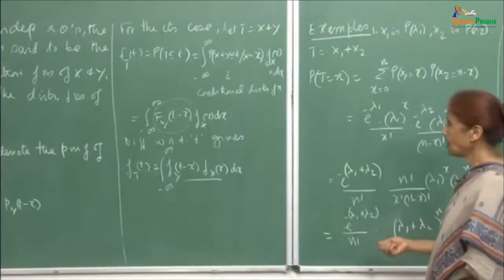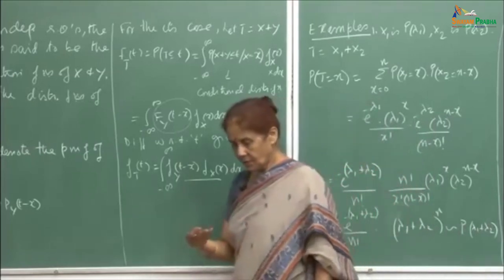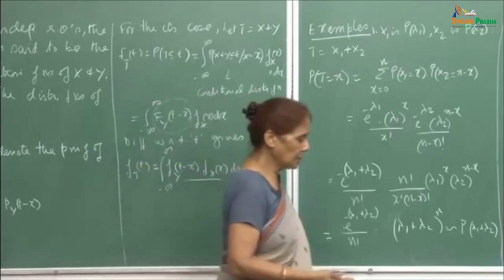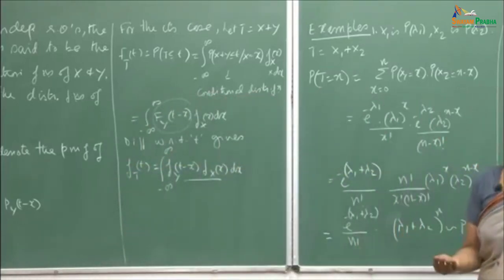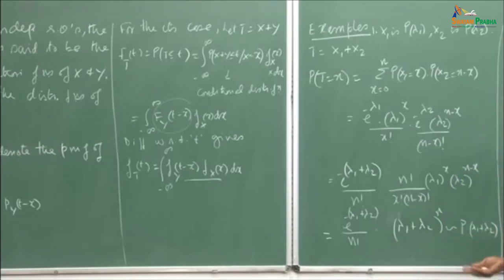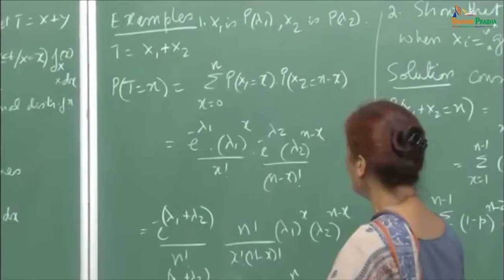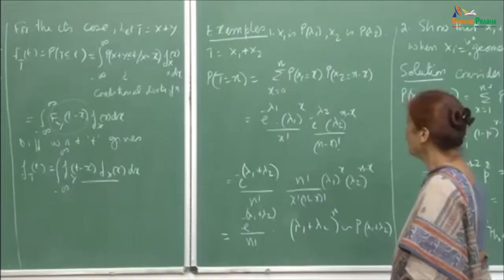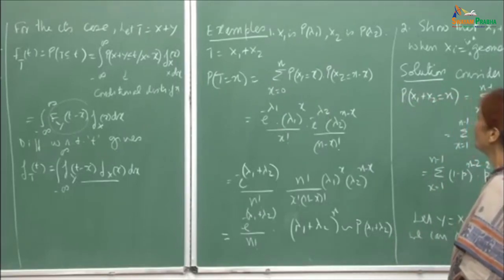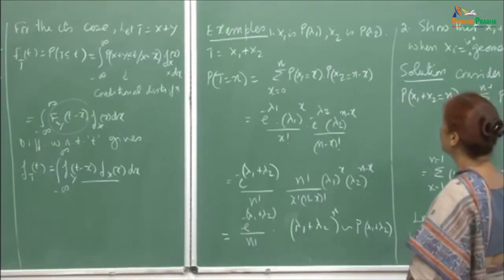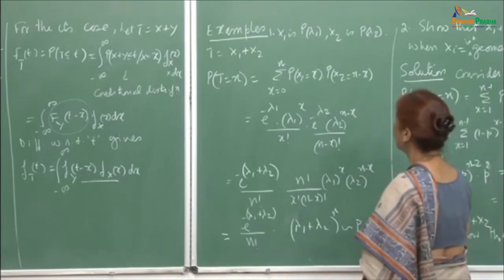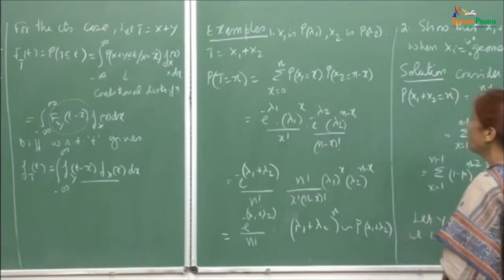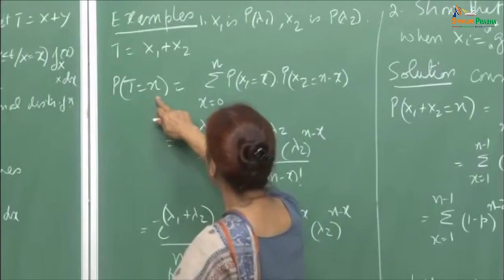There will be some repetition, in the sense that for sums of independent random variables in quite a few cases — by other methods such as the transformation method or the moment generating function — we have already obtained the density functions. But here I just want to show you the working of this particular method, so we will go through a few examples. Suppose X₁ is Poisson(λ₁) and X₂ is Poisson(λ₂); let T be their sum, and we want to find P(T = n).